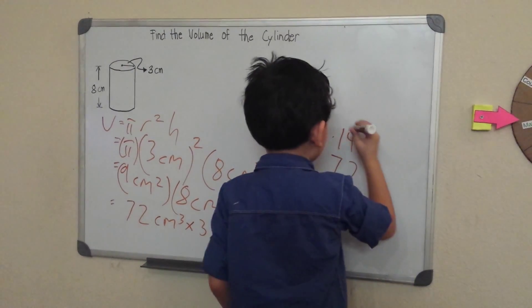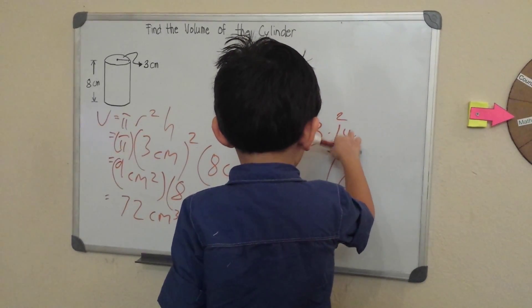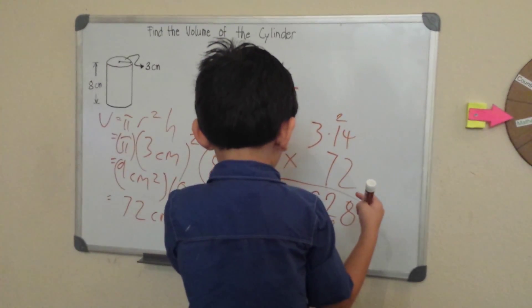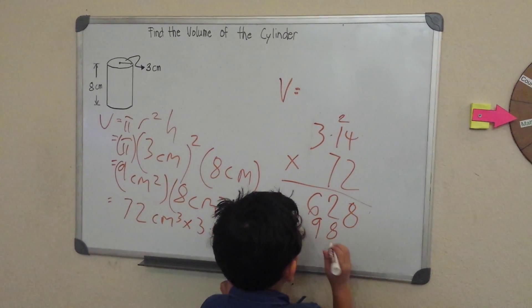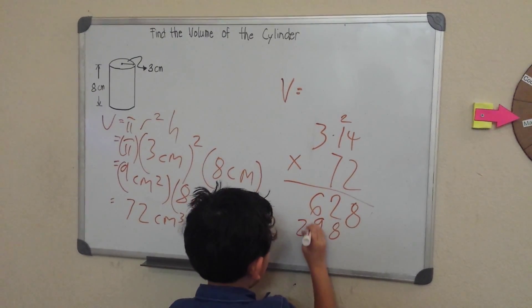28 carry out of 2. And then 7 times 1 is 7, 7 times 1 is 7, plus 2, which is 9. Now 7 times 3, which is 21.